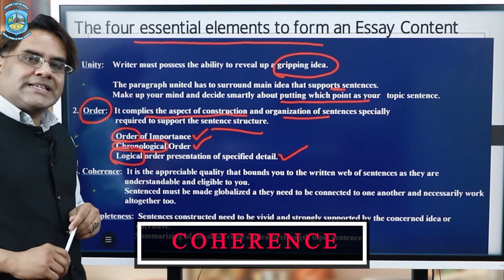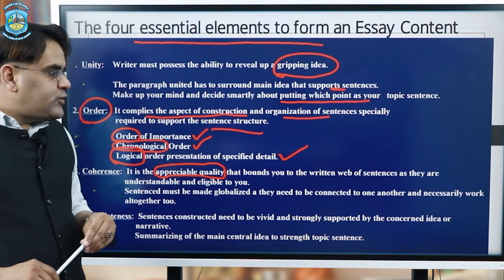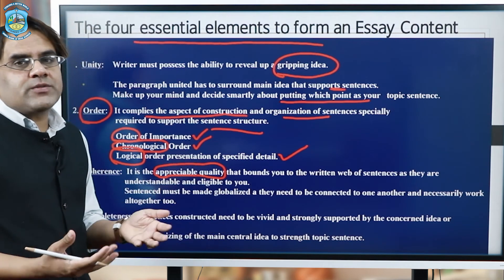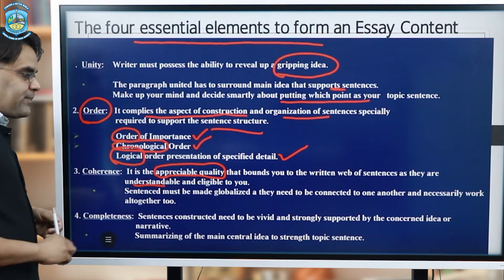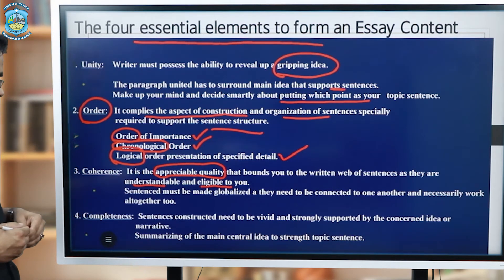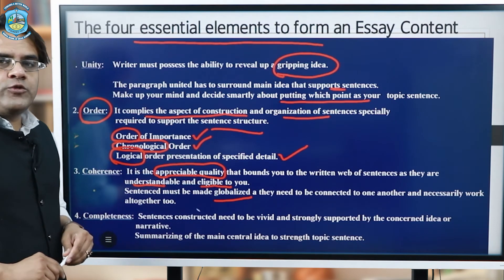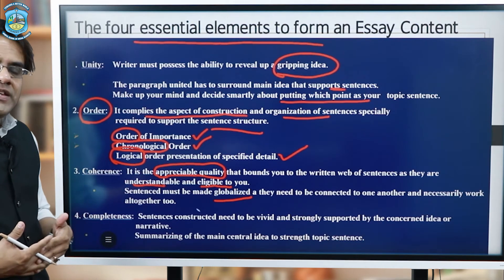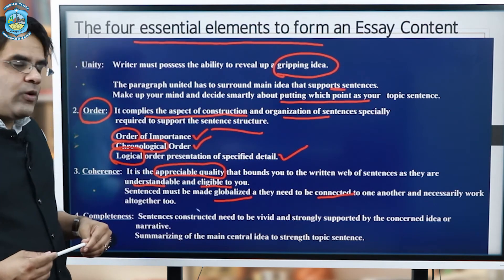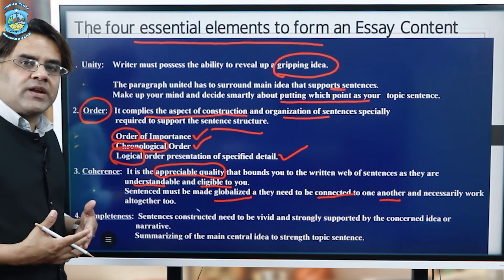Now comes coherence. What exactly is coherence? It is an appreciable quality that binds you to the written web of sentences. Whatever chunk of words you take up, it is like a web of words responsible for making up the sentences. It should be understandable and legible at the same time. Sentences must also be taken up in such a way that they have a globalized effect. When you take up the global aspect, you know how to connect the words with one another, and that's how the words come together as a paragraph.